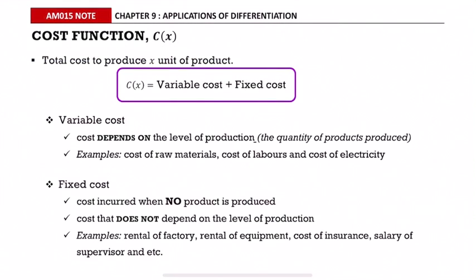Cost function is denoted as c of x. It is the total cost to produce x units of product. Cost function equals variable cost plus fixed cost. Variable cost is cost that depends on the level of production or the quantity of products produced — for example, cost of raw materials, cost of labor, and cost of electricity.